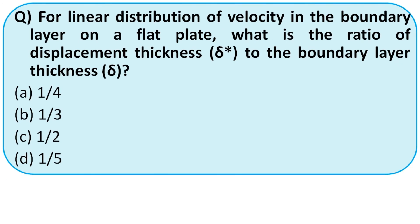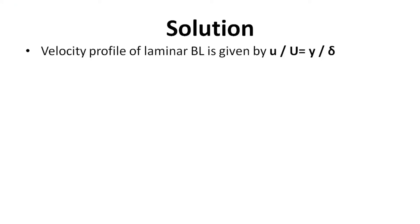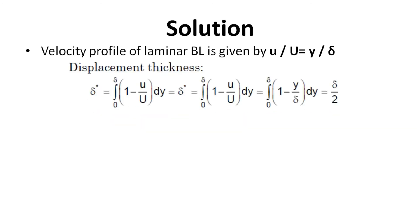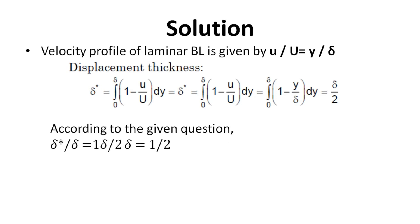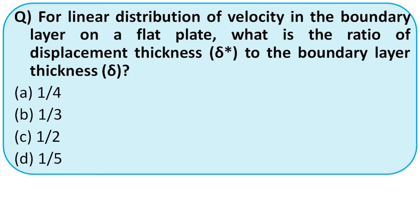For linear distribution of velocity in the boundary layer on a flat plate, what is the ratio of displacement thickness δ* to boundary layer thickness δ? Options: 1/4, 1/3, 1/2, 1/5. Using the linear velocity profile u/u∞ = y/δ and the displacement thickness formula, substituting and integrating with limits gives δ* = δ/2. Therefore δ*/δ = 1/2. The right answer is option C.